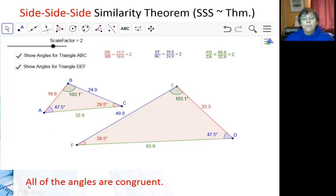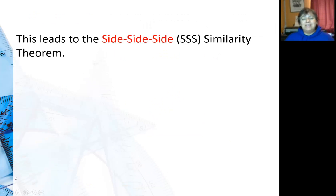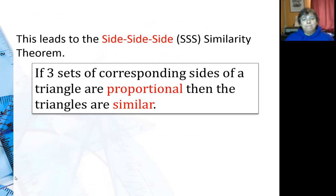So we can definitely say that if all the sides are proportional, all of the angles are congruent, which leads us to the Side-Side-Side Similarity Theorem. If three sets of corresponding sides of a triangle are proportional, then the triangles are similar.